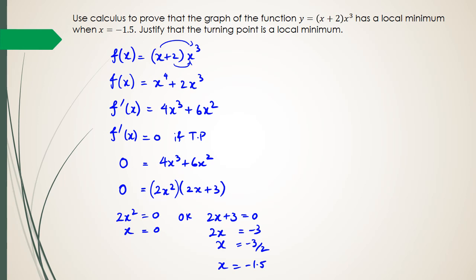What we've actually discovered here is that we've got two turning points: a turning point at x equals zero, and a turning point at x equals negative 1.5. Now there are multiple ways to prove that the turning point is a local minimum.